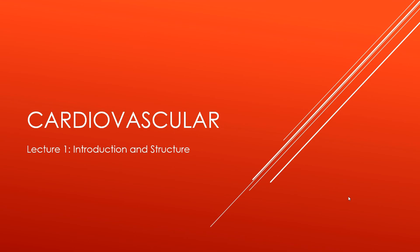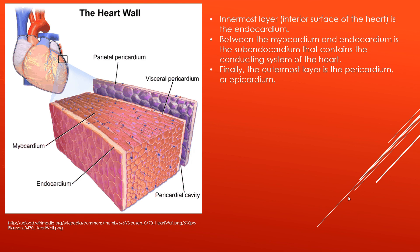We're going to begin our lectures on the cardiovascular system for Step 1. This lecture is going to deal with the structure and the histology of the heart. The first thing we're going to look at are the layers of the heart wall. Right here is the ventricle, and we're going to amplify this and take a look at specifically what layers of cells comprise the ventricle.